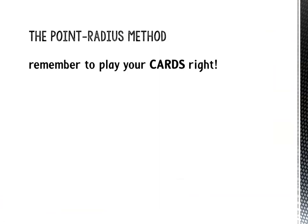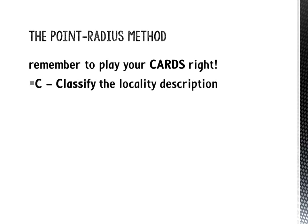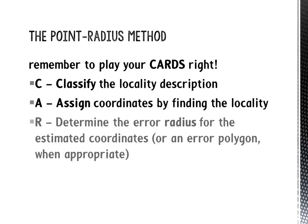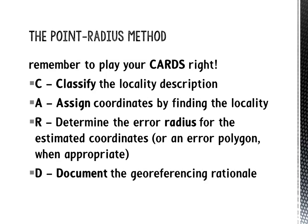To remember how to use the Point Radius method, you can use this handy mnemonic — remember to play your cards right. First, you need to classify the locality description. Then you assign latitude and longitude coordinates. Next you add an error radius. Lastly, you document the process you used to georeference the specimen and save your work. Let's go through this step by step.